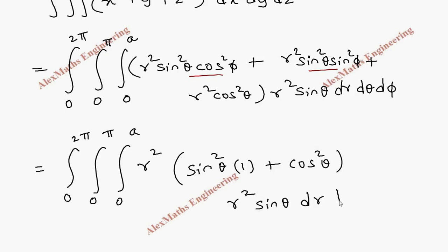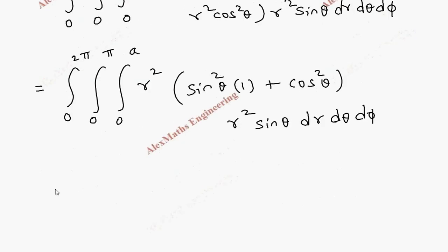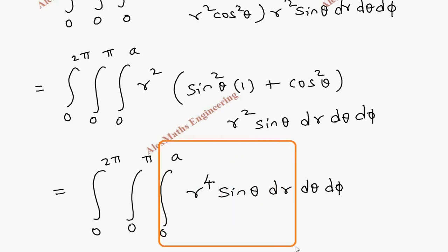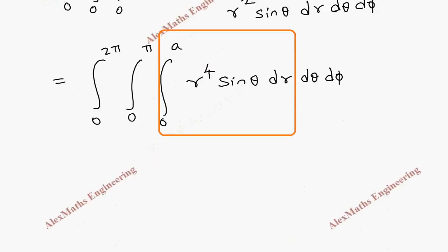Finally we have the integral from 0 to 2π, 0 to π, 0 to a of r² × r² = r⁴, times sinθ, dr dθ dφ. As the first step we evaluate with respect to r, treating sinθ as a constant.